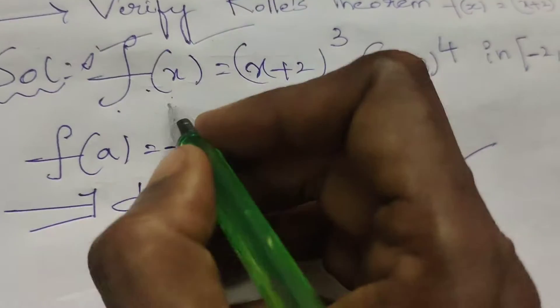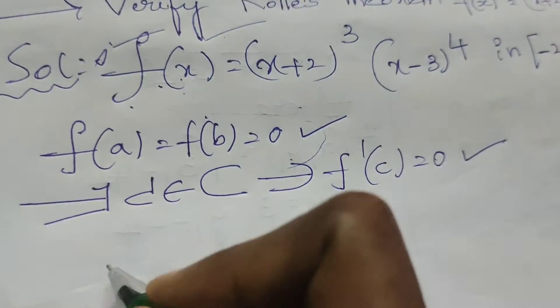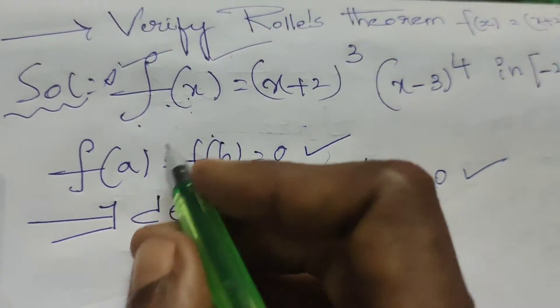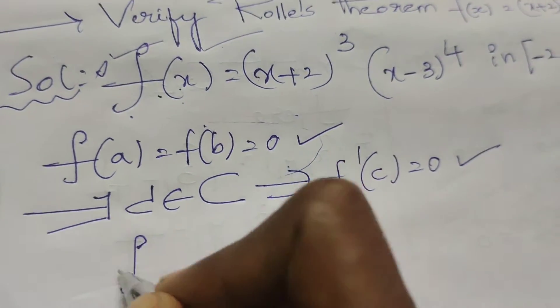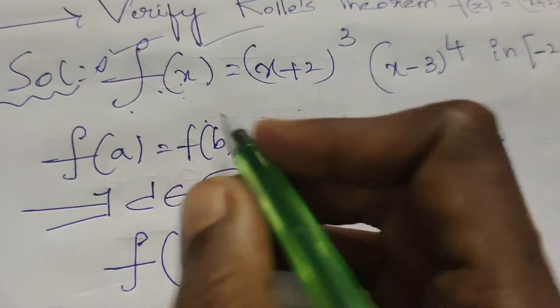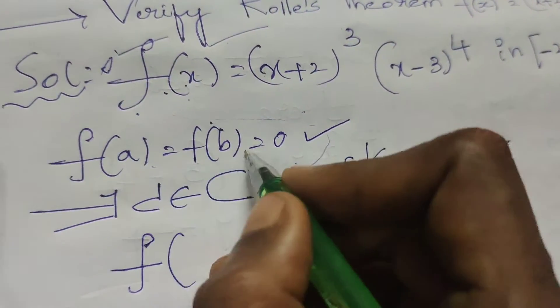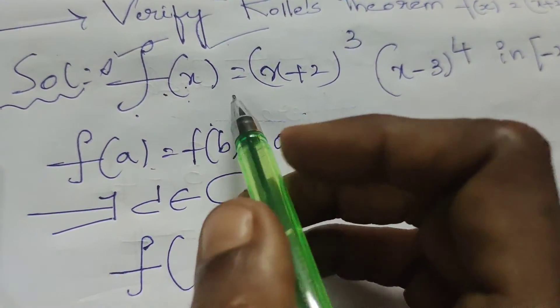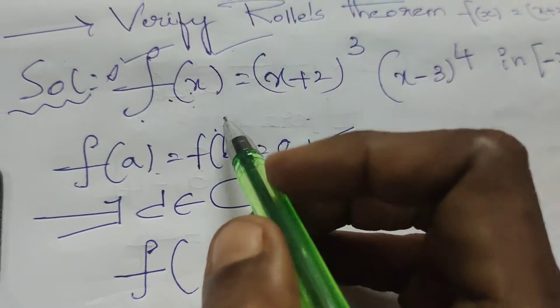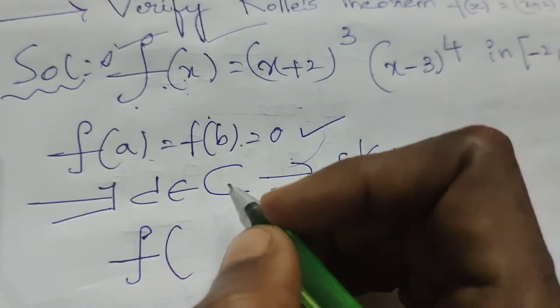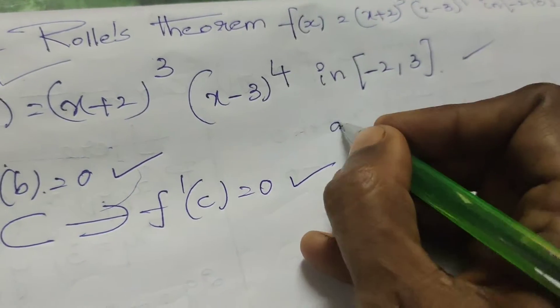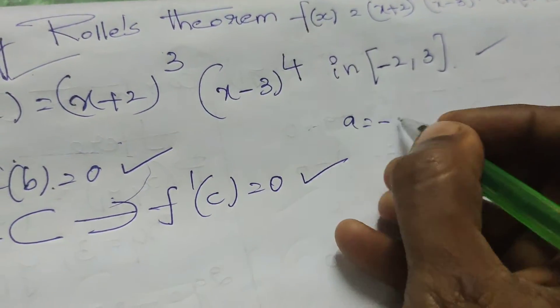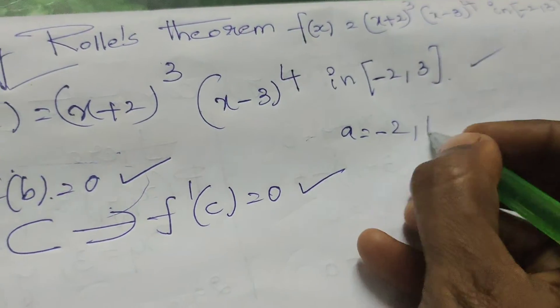First, we verify the given function satisfies these conditions. Here a = -2 and b = 3.